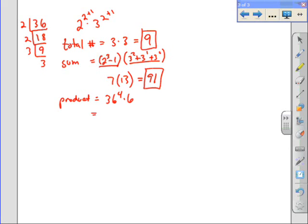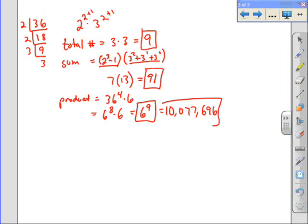Well, 36 is the same as 6 squared, so 36 to the 4th can be written as 6 to the 8 times 6, which is 6 to the 9th. And you could leave it as that, or you could actually go in on your calculator and do 6 to the 9th, which gives us a very, very big number. In this case, it is 10,077,696. And that is the product of all of the factors of 36.